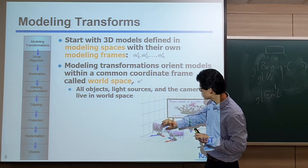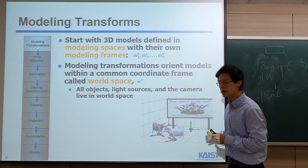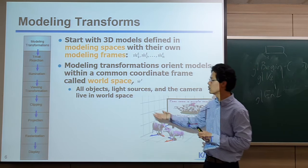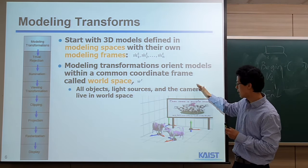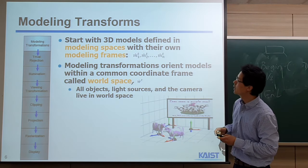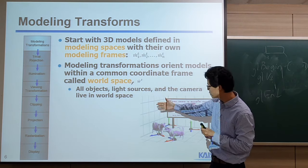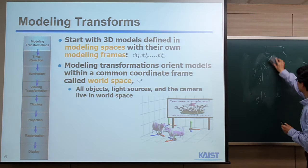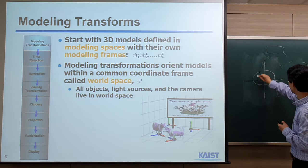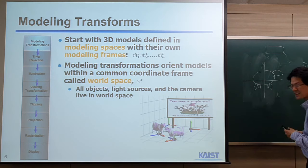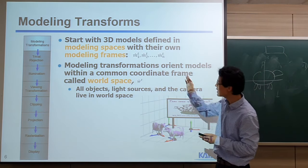Modeling transformation transforms each object, defined in its own model space, into the world space. Everything is then defined in the world space, including the camera and light sources needed for visualization. Modeling transformation starts from each individual object defined in its own model coordinate, and transforms it into the scene world.